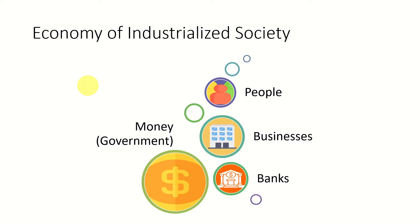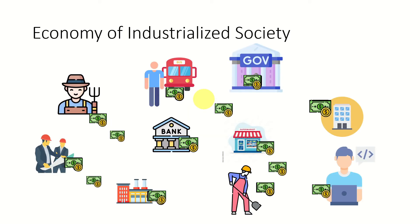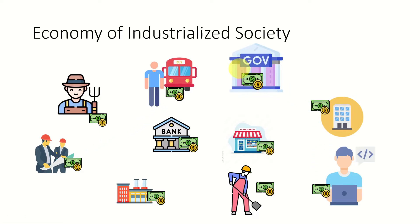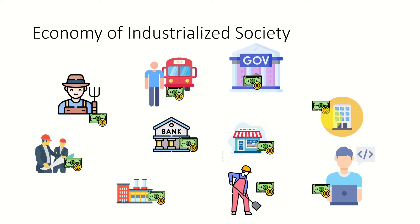In an industrialized society with more complicated needs, the key factors include the government that supplies money, supplementary banks, business organizations, and people. In both free market and closed economies, it is the government that can supply and control money, supplemented by banks under direct or indirect government control. Individuals or business organizations can produce products and services and exchange them using money. In a capitalistic system, businesses or people can accumulate money and invest it in existing or new businesses.